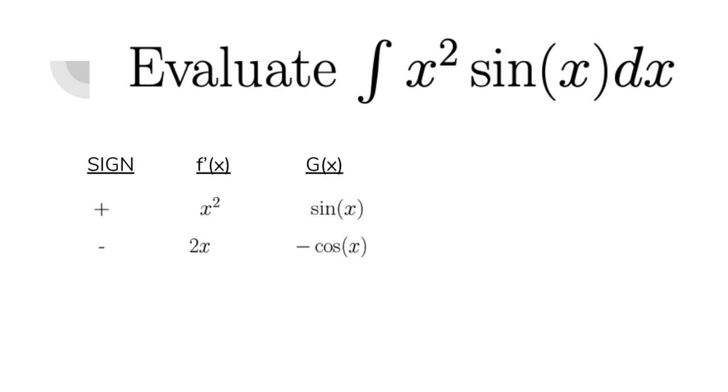Now the second column would read like this. Since the first sign was positive, the second sign will be negative. And the derivative of x squared is 2x, so the next term in the f prime x column will be 2x. And then the integral of sine of x is negative cosine of x. So in this case, the g of x column will read negative cosine x on the second line.